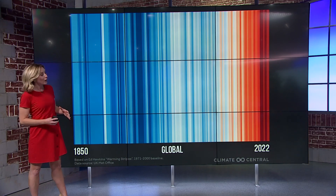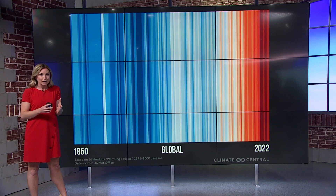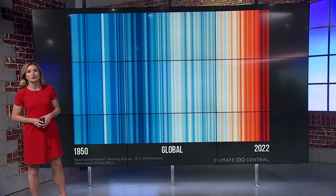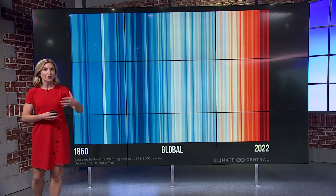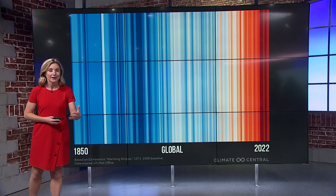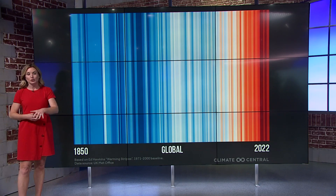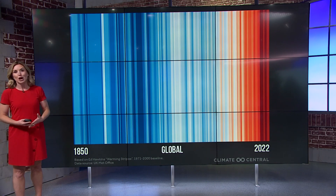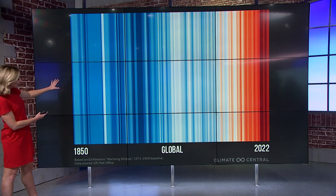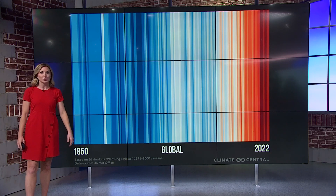Each stripe represents the global temperature average over a year from 1850 to 2022. The red stripes are years that were much hotter than that baseline average, and the blue stripes are years that were cooler. What you're looking at here are the global temperature stripes showing significantly cooler than average temperatures back in the 1850s compared to 2022.